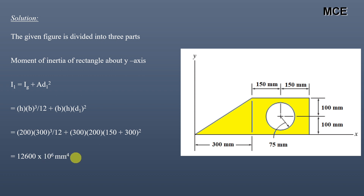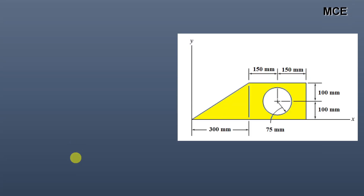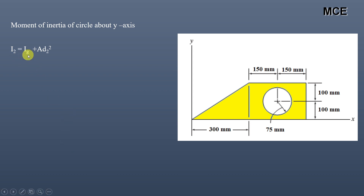After that, we will find the moment of inertia of the circular portion about the y-axis. Again, this will be given by the parallel axis theorem, which states that the moment of inertia of the circle about the y-axis will be equal to the moment of inertia of the circle about its own centroidal y-axis, which is parallel to this y-axis, plus the area of the circle multiplied by the distance between the centroid of the circle and the y-axis.